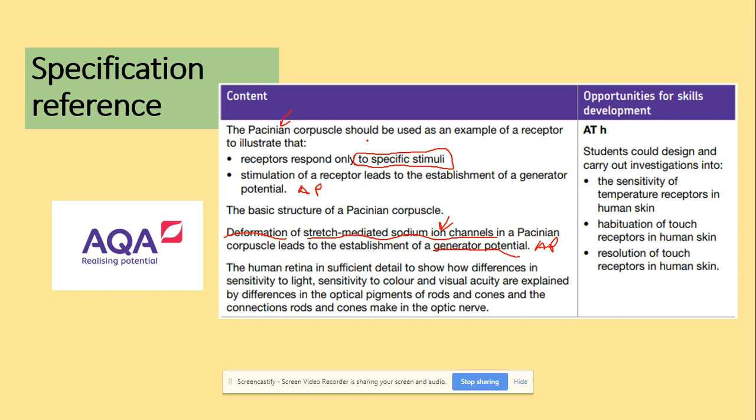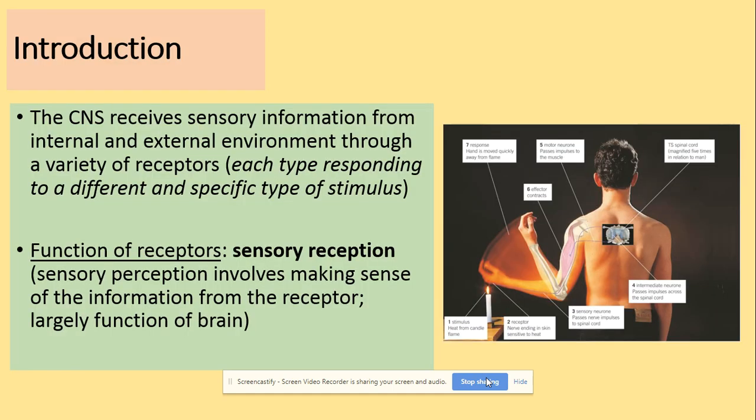In this video we will be looking at the Pacinian Corpuscle. In our next video we will be looking at the rod and cone cell in the eye. Before we start, we need to recap that the central nervous system receives sensory information from the internal and external environment through many different receptors, and the function of the receptors is sensory reception.